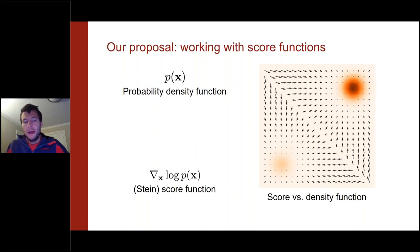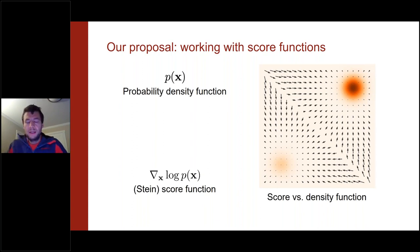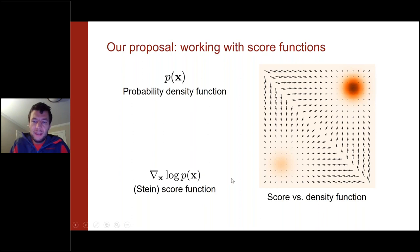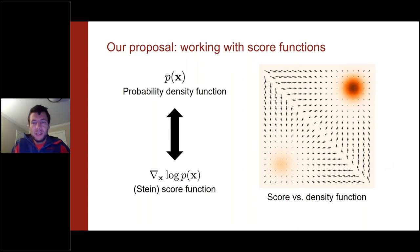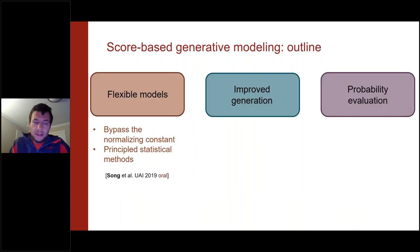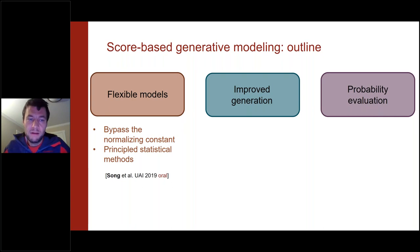The score is the gradient of the log density function — a vector telling you the direction in which the log density grows most rapidly. For a mixture of two Gaussians, the vector field has arrows pointing toward the two modes of the distribution. The score function and the probability density function are essentially equivalent representations, but working with the score function has key advantages: it allows us to bypass the normalization constant, enabling very flexible neural network architectures.